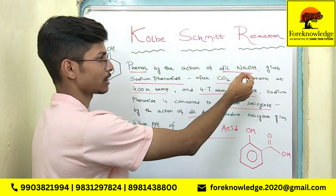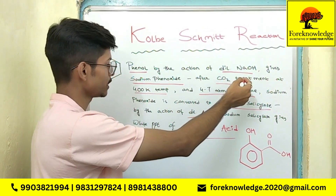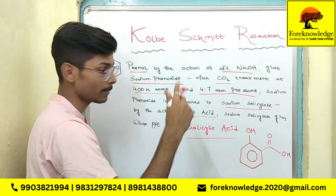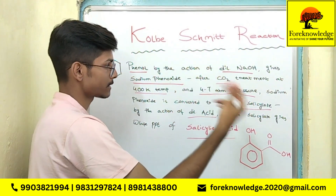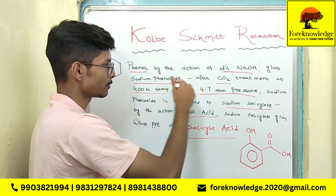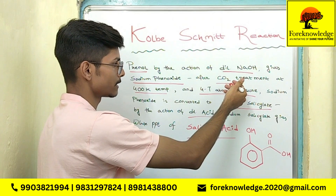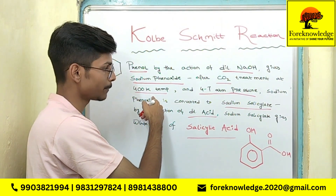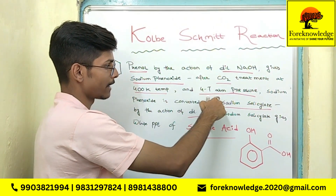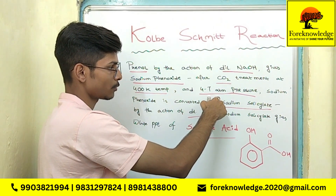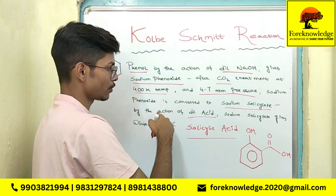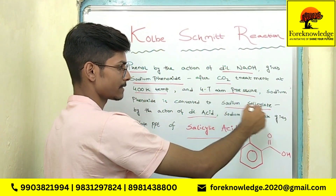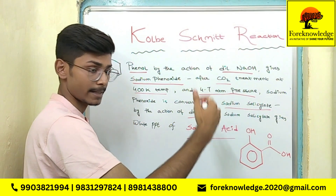Let me remind you one more time. Phenol by the action of dilute NaOH will give you sodium phenoxide — that will be step 1. And in step 2, this sodium phenoxide will react with CO₂. Keeping in mind, at 400 Kelvin temperature and 4 to 7 atmospheric pressure, sodium phenoxide will be converted to sodium salicylate.